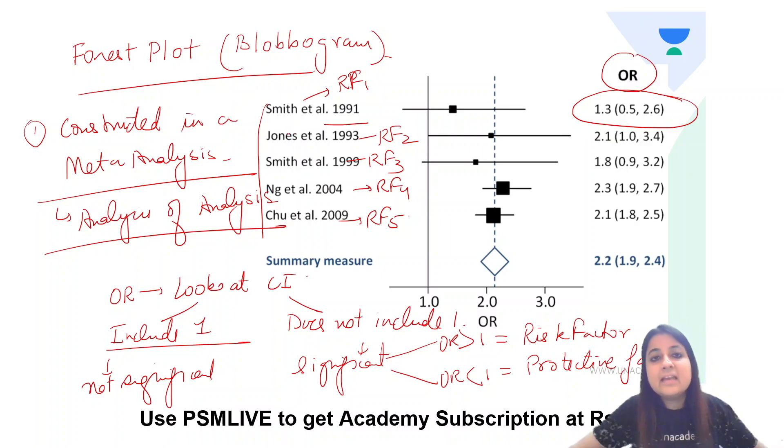Now, if you look at the first study, Smith et al., where you are studying the first risk factor, odds ratio is 1.3 with confidence interval 0.5 to 2.6. If you look at the interval, 0.5 to 2.6, does it include one? 0.5, 0.7, 0.8, 0.9, 1. One is included. So this one is not significant.